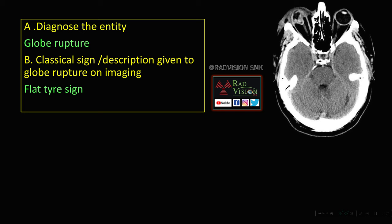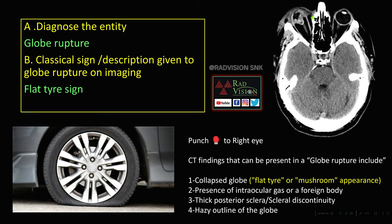In the first case, there is a deformed globe on the right side with flattening of the globe, free intraocular gas, absent orbital swelling, and thickening of the posterior sclera — a classical case of globe rupture. The classical sign here is the flat tire sign, where the collapsed globe mimics a flat tire or mushroom appearance, with intraocular gas or free foreign bodies, thick posterior sclera, scleral discontinuity, and hazy outline of the globe. This was a case of punch injury to the right eye.